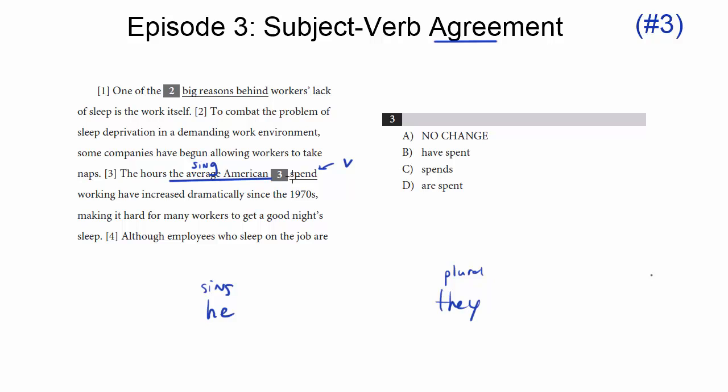So would it be he spend or he spends? Of course, it's he spends in the present tense, right? And so the singular verb has got to have that S at the end of it. Whereas they would be just spend. This is the plural form. We don't need the S.